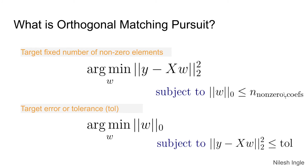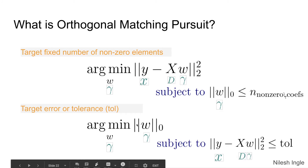The scikit-learn docs use different notation: w means γ, y means x, and X means the dictionary D. If we fix the number of non-zero elements, we minimize the corresponding objective function. If we target a specific error, we minimize another objective function subject to the residual being less than a preset tolerance value.